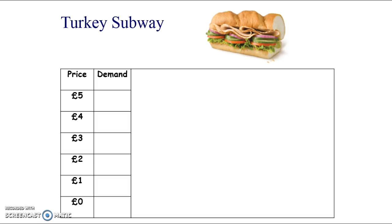To make this simple to understand, I use the example of sandwiches in class — specifically turkey sandwiches on the menu at Subway. If I ask my students how many they would purchase at various prices, it's always the same sandwich with only the price changing. At a very high price, not many people want to buy it, but if the product is free, lots of people want it. One student always asks what's wrong with it if the price is zero — the answer is nothing, it's still the same product.